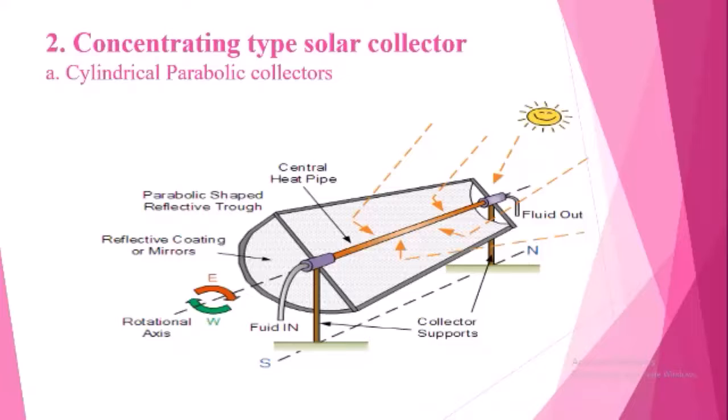We are seeing the second type of solar collector: the concentrating type solar collector. It is divided into two groups. The first one is the cylindrical parabolic collectors. Here is the diagram showing a central heat pipe.